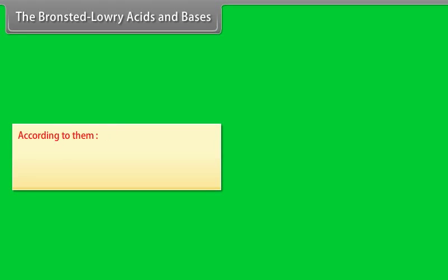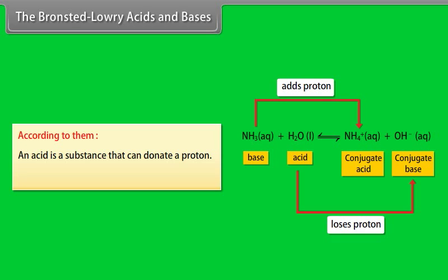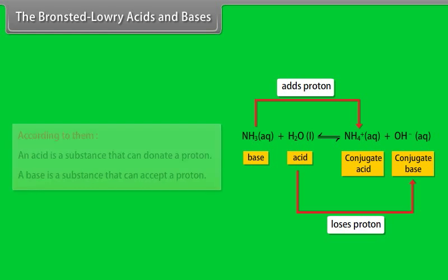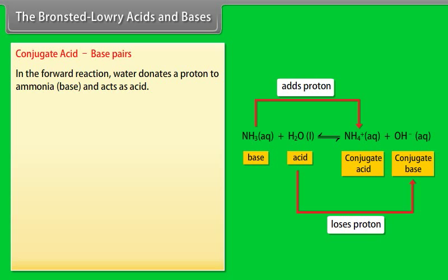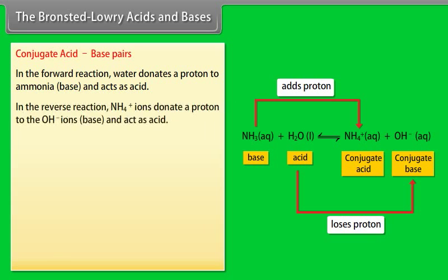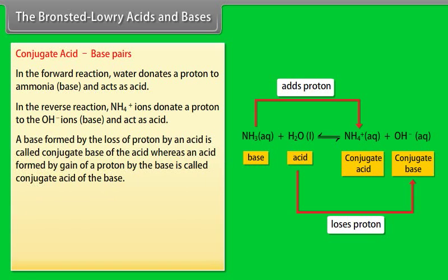The Bronsted-Lowry acids and bases: According to them, an acid is a substance that can donate a proton, and a base is a substance that can accept a proton. Conjugate acid-base pairs: In the forward reaction, water donates a proton to ammonia and acts as an acid. In the reverse reaction, NH₄⁺ ions donate a proton to the OH⁻ ions and act as an acid. A base formed by the loss of a proton by an acid is called the conjugate base of the acid.